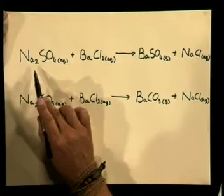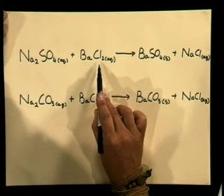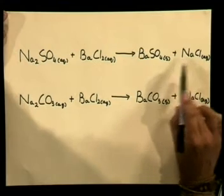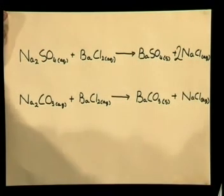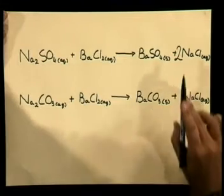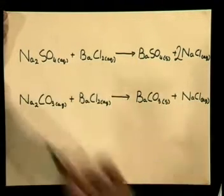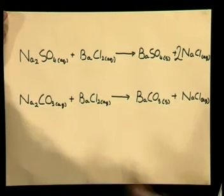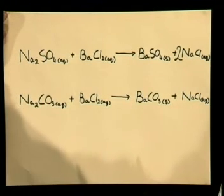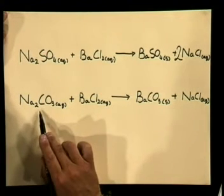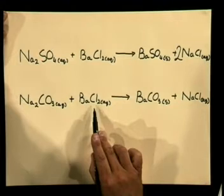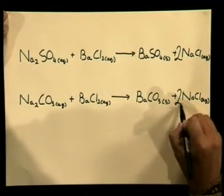We must check that these equations are balanced. This means that there must be the same number of atoms before the reaction as there are after. In the first equation, there are two sodium ions and two chloride ions on the reactant side and only one of each on the product side. So, we need to write a 2 in front of the sodium chloride. This gives us two sodiums and two chlorides on either side. We can balance the reaction between sodium carbonate and barium chloride in exactly the same way, giving us: sodium carbonate plus barium chloride gives barium carbonate plus two sodium chlorides.